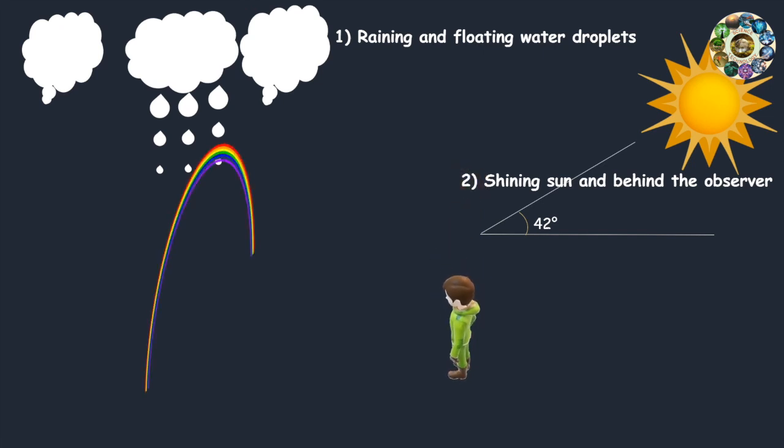Third, the observer's location must be between the sun and the rain. Rain, fog, or some other source of water must be in front of the viewer.